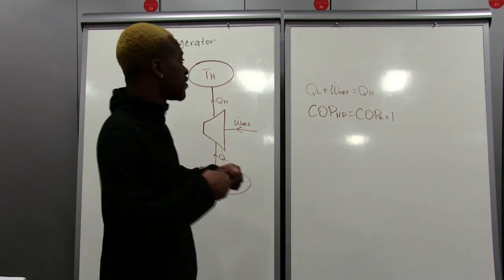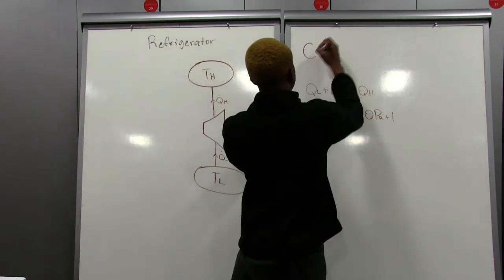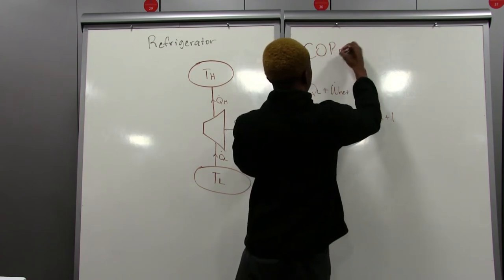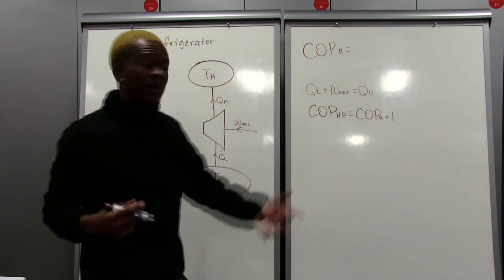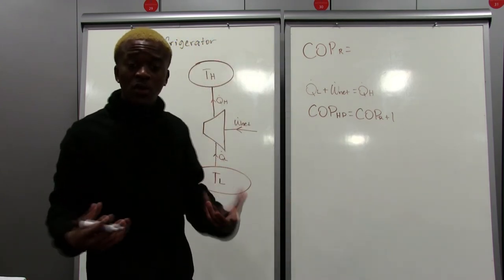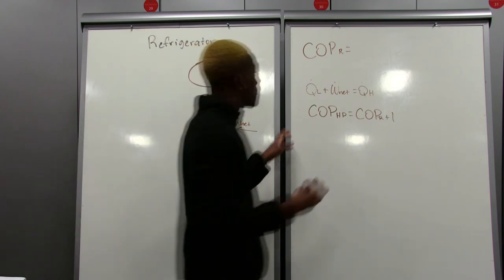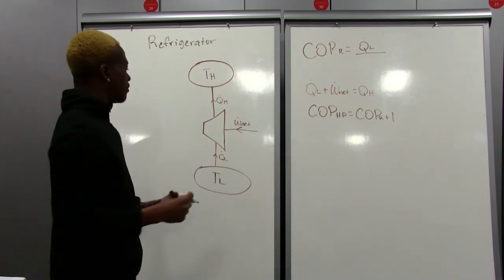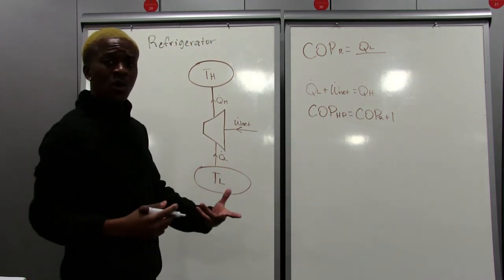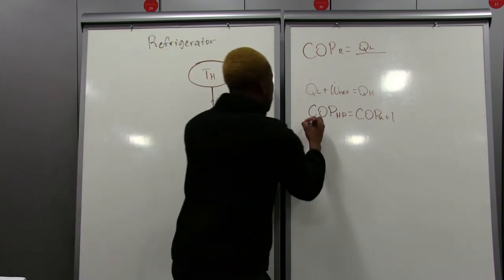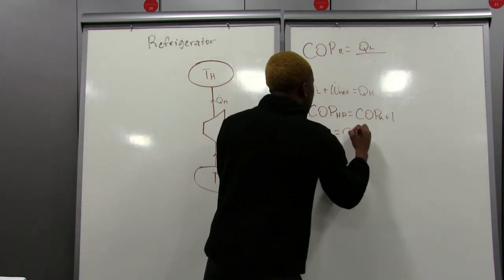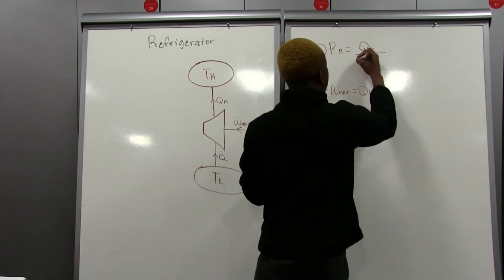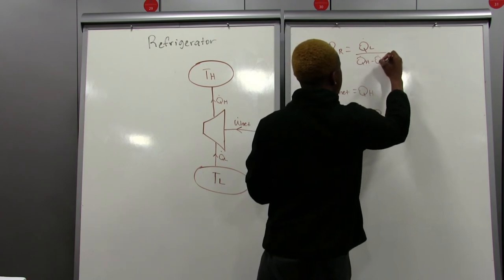Another thing we need to know since we're talking about coefficient of performance: the coefficient of performance for a refrigerator is simply desired output over required input. So our desired output for a refrigerator is our QL, we want that cold temperature. Our required input is simply that work net, and we know that work net is equal to QH minus QL. So that being said, the coefficient of performance for a refrigerator is simply equal to QL over QH minus QL.